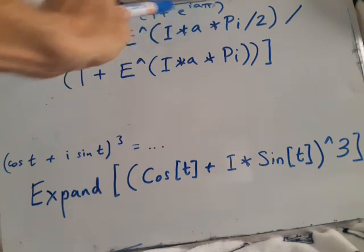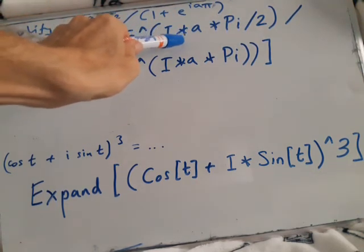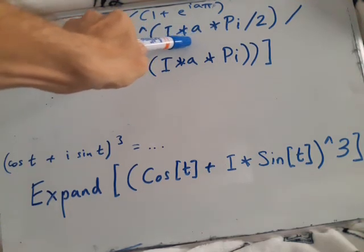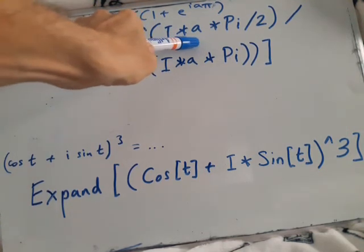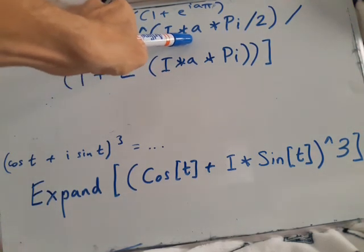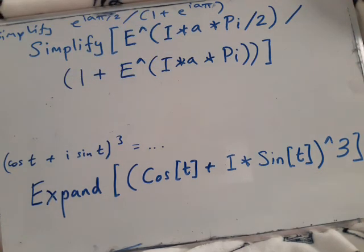is that with multiplication, you need to use star to multiply two things. If you put I*a without a gap, it would get confused and think Ia is a new variable. If you don't want to type star, you can actually just leave a space and Mathematica will understand it as multiplication.